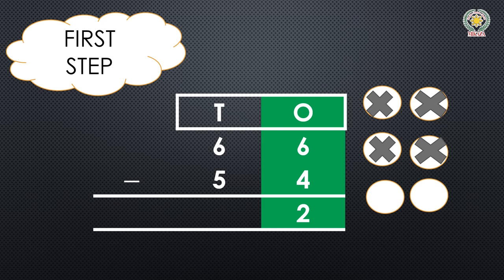First I will subtract the ones numbers. 6 minus 4 in the ones place. We have 6 circles, we have 4 circles minus. We have cut these 4 circles. When you look at the picture we have taken 4 circles, so the answer is 2.